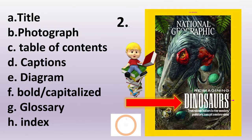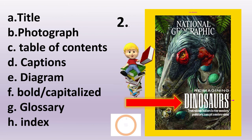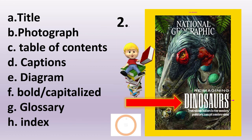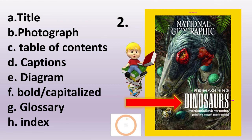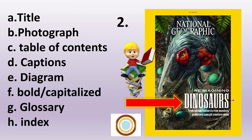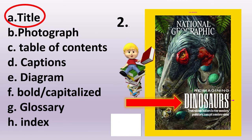For number 2, the arrow here points to the word dinosaurs. What do you think is this feature of informational text? The correct answer is letter A — Title.